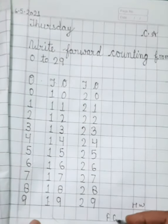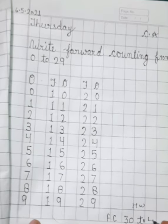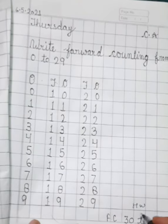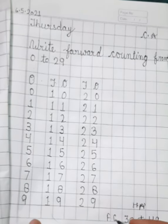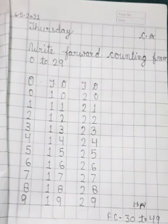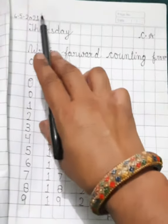And your homework is forward counting twenty nine, forward counting thirty to forty nine. Yeh aapko apne homework mein karna hai. This is your home assignment. Write forward counting thirty to forty nine. But in homework you will mention date.